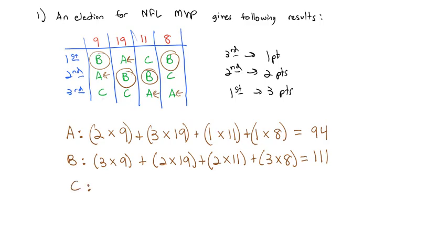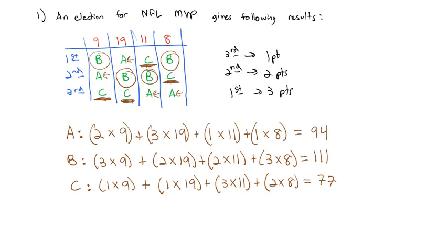Candidate C then. We see Candidate C starts off in third place, one point times those nine votes, plus Candidate C is in third place, one point times the 19 votes, plus Candidate C's in first place, three points times those 11 votes, plus Candidate C's in second place, two points times those eight votes. And when we multiply that out, C ends up with 77 points.